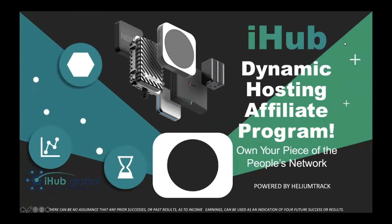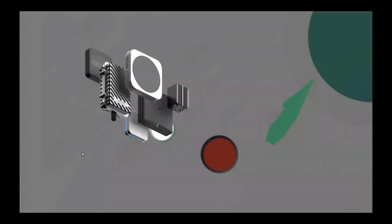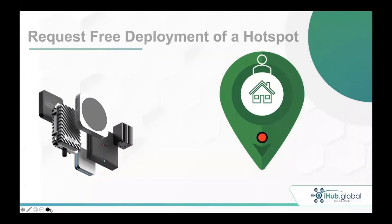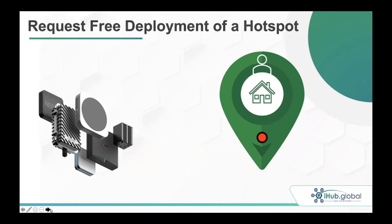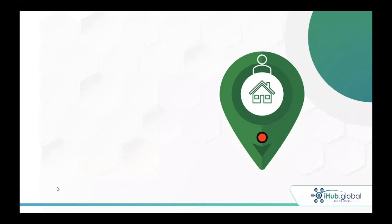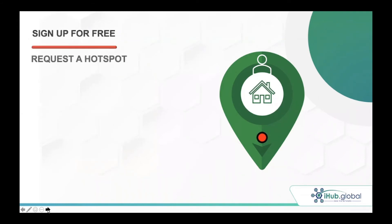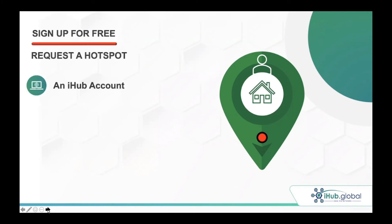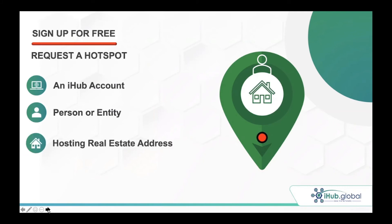We're going to welcome you to the iHub Dynamic Hosting Affiliate Program and teach you how to level up and own a piece of the people's network powered by Helium Track, our proprietary software within iHub. It all starts with a free deployment of hotspots. We are a company that sells software to deploy and manage hotspots, and we deploy hotspots for free. Getting started really just requires three things: number one, sign up for free and request a hotspot by creating an iHub account; number two, a person or entity to create that account; and number three, a hosting real estate address.